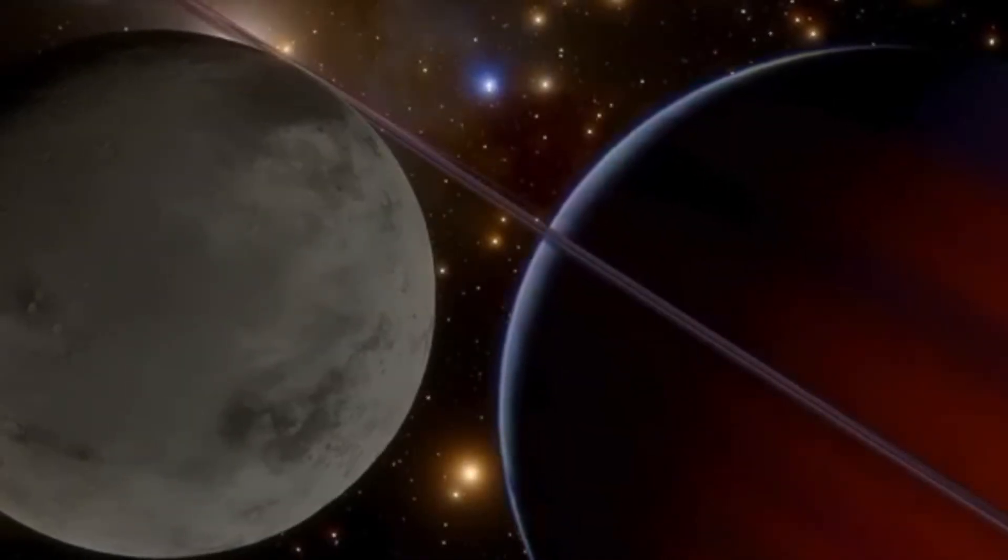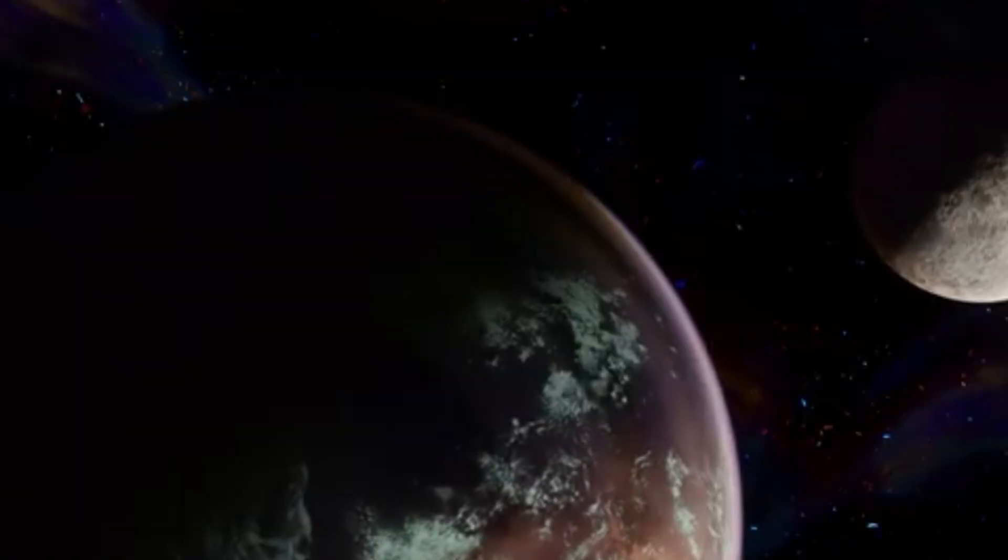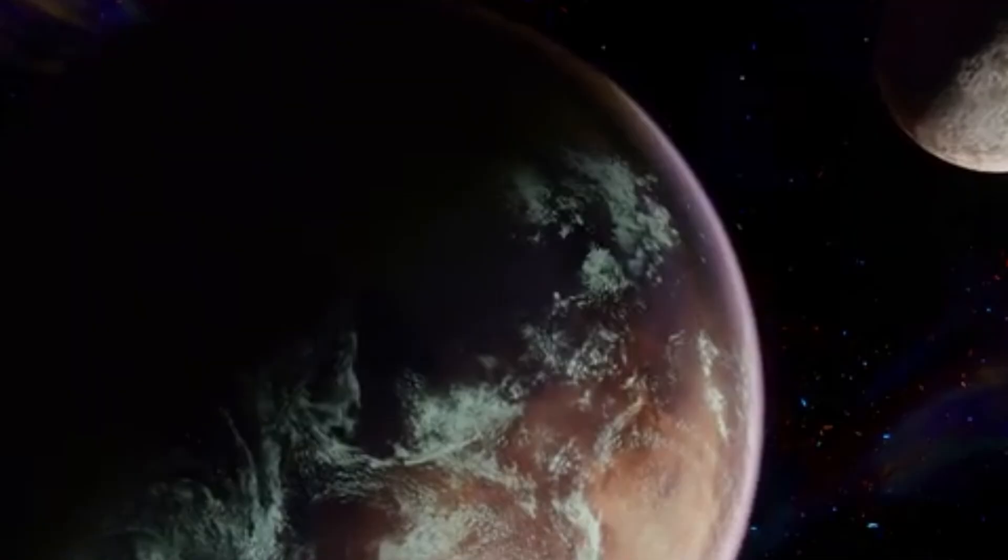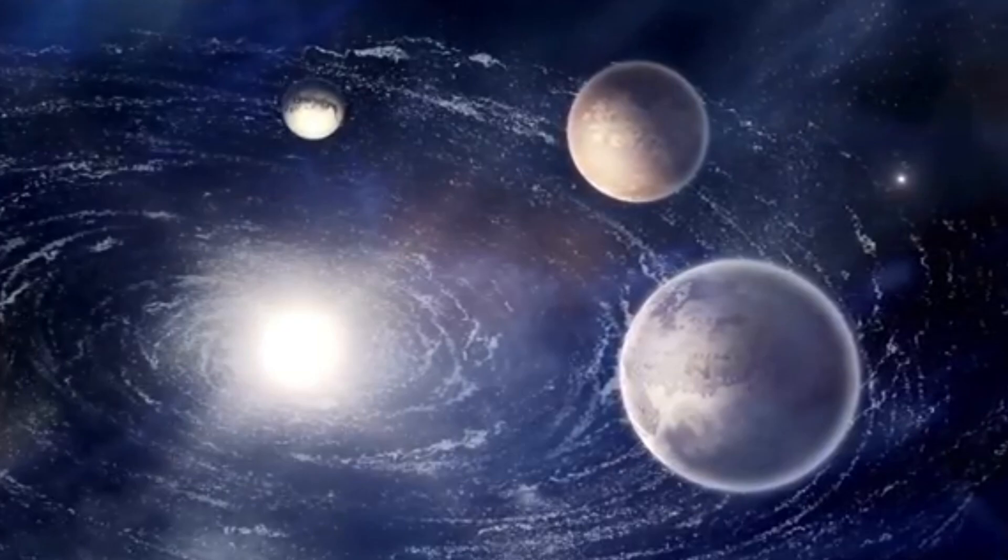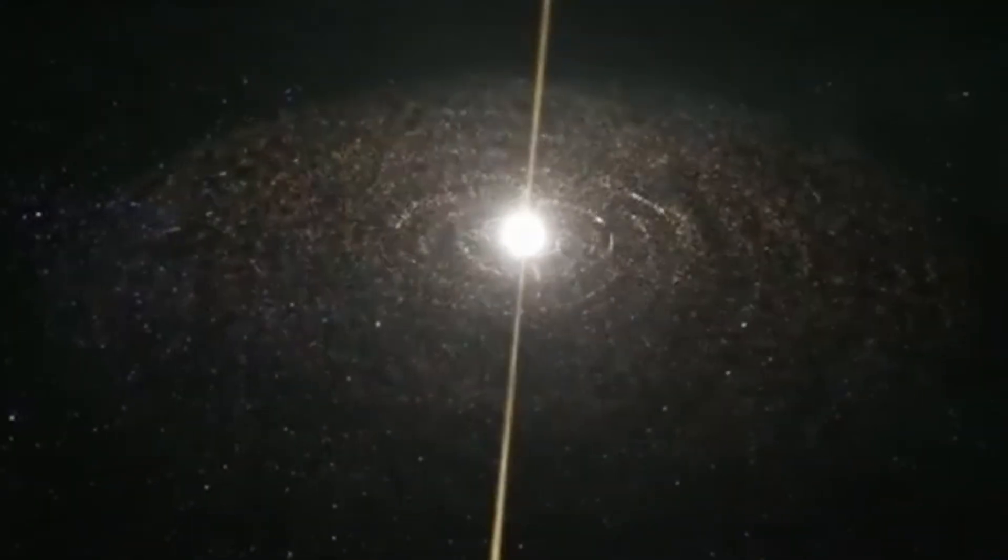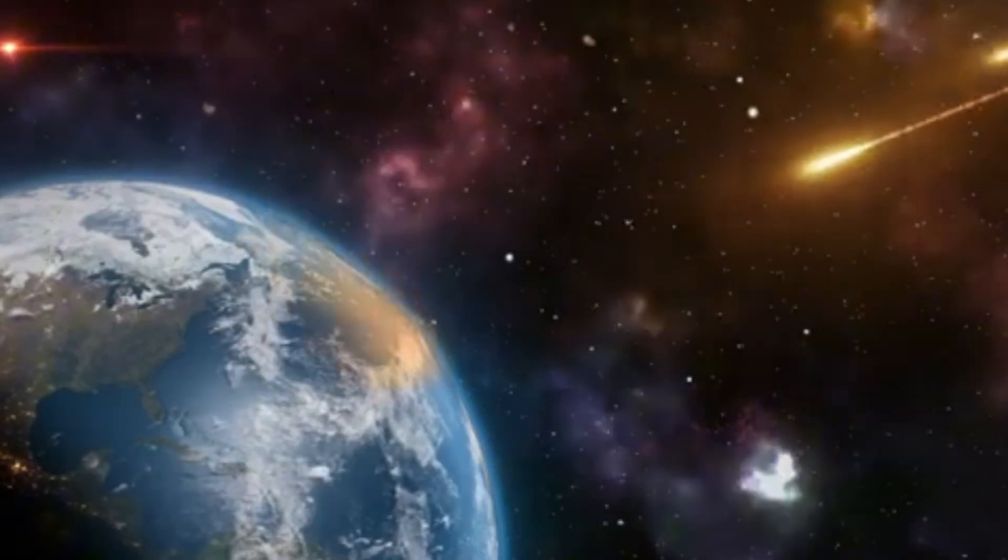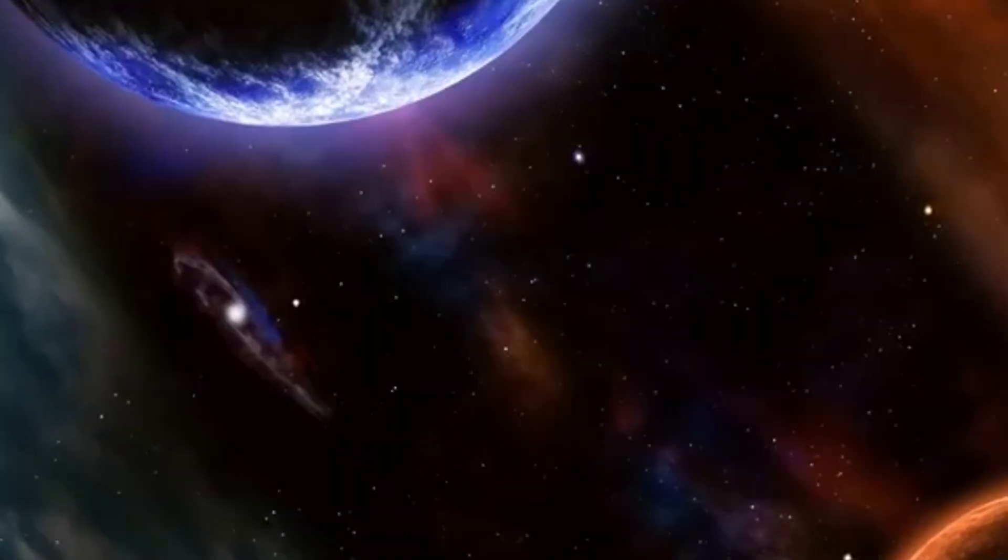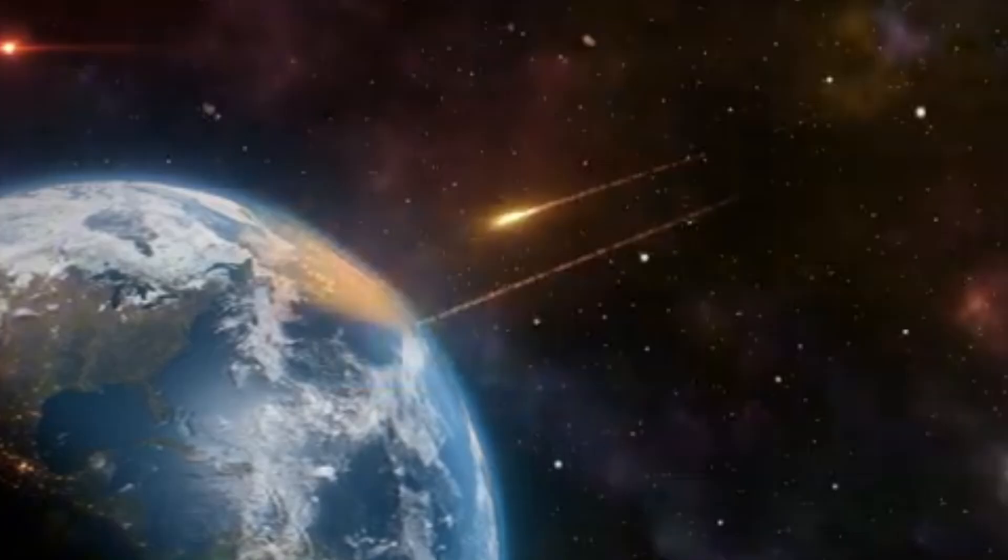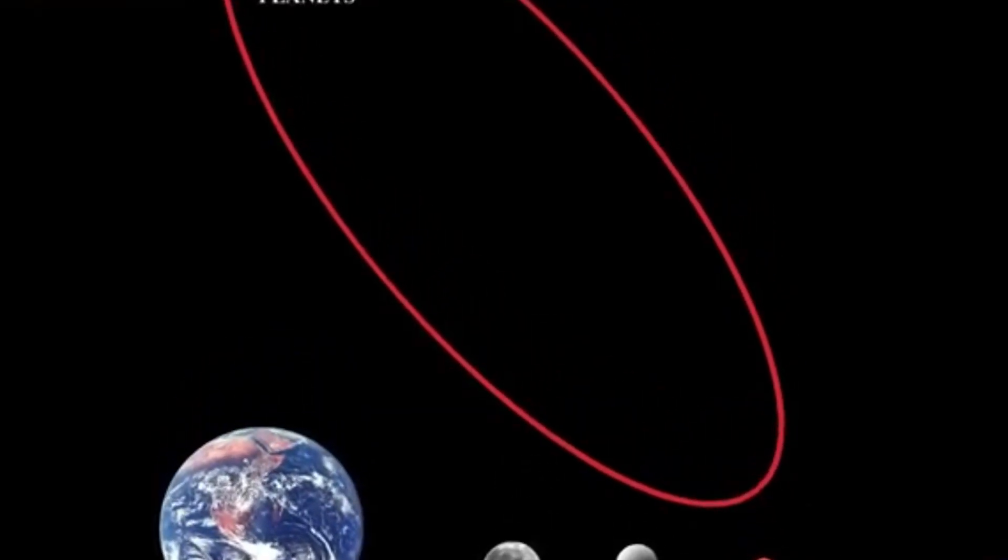Moreover, the physics governing these distant worlds offer a rare laboratory for testing the limits of our understanding. The gravitational interplay between far-flung objects like 2017 OF201 and hypothetical bodies like Planet 9 can provide key insights into orbital mechanics, planetary migration, and even the early history of the Milky Way. Some models suggest that Planet 9 may not have formed in our solar system at all, but was instead captured from a neighboring star system during the sun's infancy, when stellar nurseries were more densely packed. If true, this would imply that our solar system has a truly alien member, an interstellar immigrant that has silently orbited the sun for billions of years.